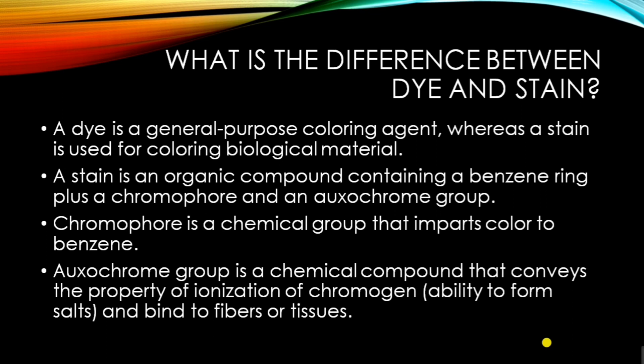A stain is an organic compound which contains a benzene ring, a chromophore, and an auxochrome group. A chromophore is a chemical group that imparts color to the benzene ring. An auxochrome is a chemical compound that conveys the property of ionization of the chromogen — that is, the ability of the chromogen to form a salt, which helps it bind to the fibers or tissues of the microorganism.